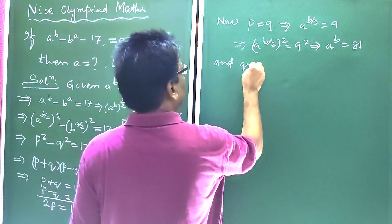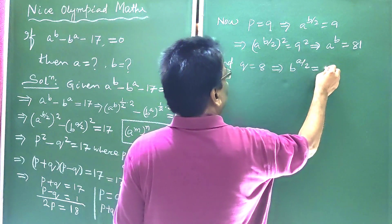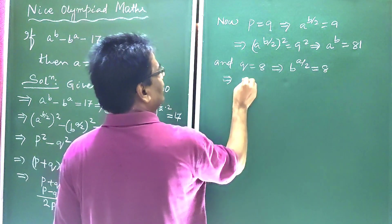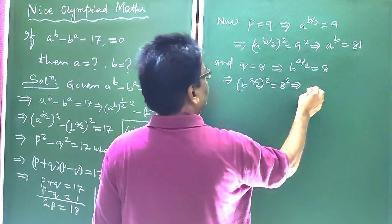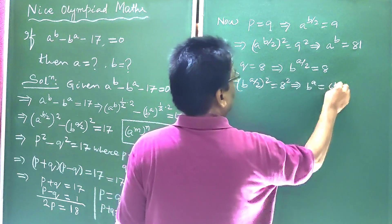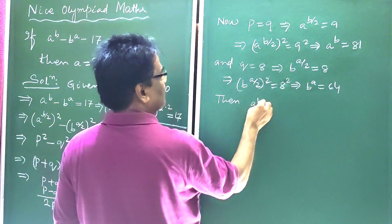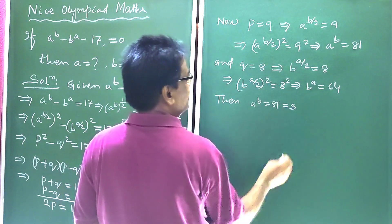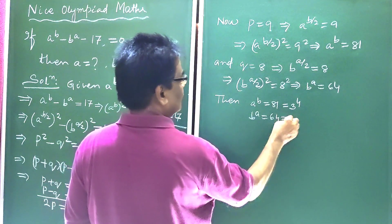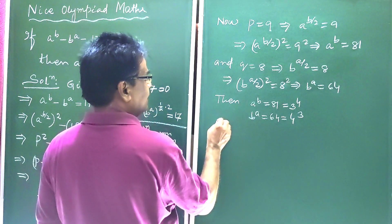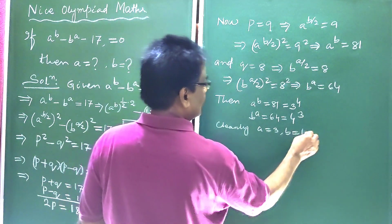And q equals 8 implies b to the power a by 2 is equal to 8. Squaring both sides: b to the power a by 2, whole squared, equals 8 squared, so b to the power a is equal to 64. Then a to the power b equals 81 can be written as 3 to the power 4, and b to the power a equals 64 equals 4 to the power 3. Therefore, clearly a is equal to 3 and b is equal to 4.